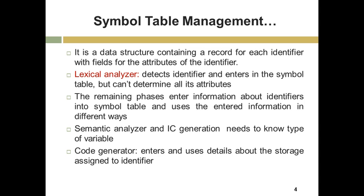The lexical analyzer detects the identifier and enters it in the symbol table, but it cannot determine all its attributes. The remaining phases enter information about the identifiers in the symbol table, and they may also use the entered information in different ways. Semantic analyzer and intermediate code generation need to know the type of variable, scope of variable, and other attributes. The code generation phase needs to enter and use the details about storage assigned to an identifier. Hence, all these phases are interacting with the symbol table — some phases are entering the details or attributes, and some phases perform the search in the symbol table to use the information.